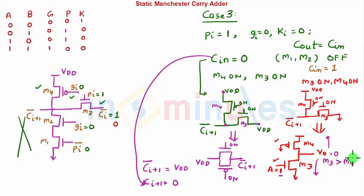Here also, this point is being pulled by M4 towards VDD and by M3 towards ground. What do we want CI+1 bar equal to? We want CI+1 equal to 1. So CI+1 bar should go to 0, which clearly says that M3 should be stronger than M4.